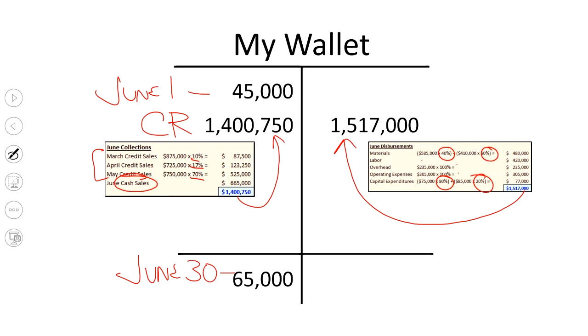I need more money to come from somewhere, which means I need a number to go right there. And what is that number? Well, as a plug, to make this thing balance, I need an extra $136,250. Where's that coming from?